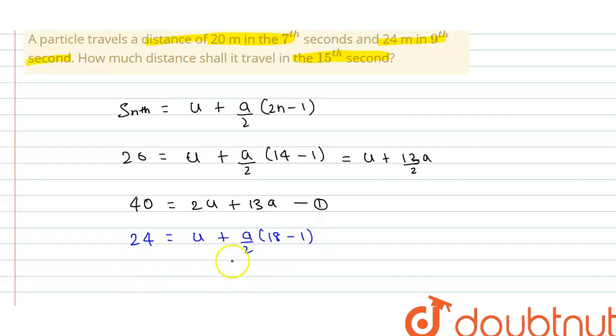So this is equals to multiply both sides by 2. 48 is equals to 2u plus 17a. This is second equation.